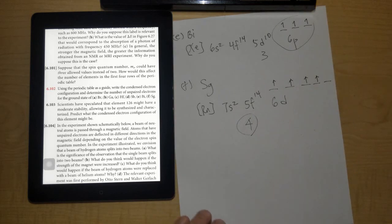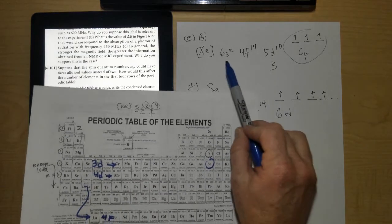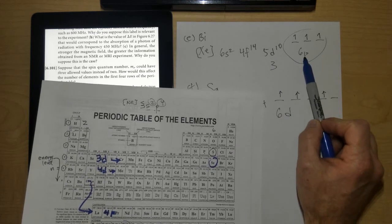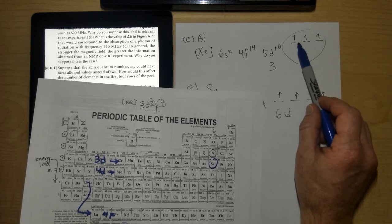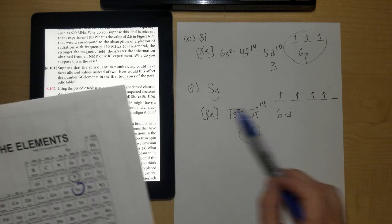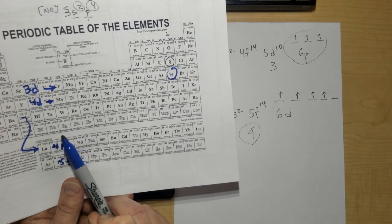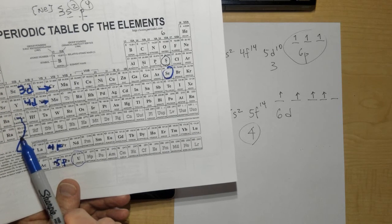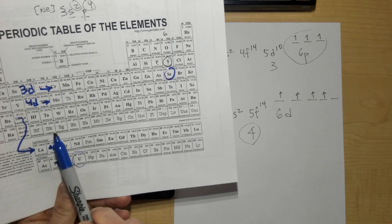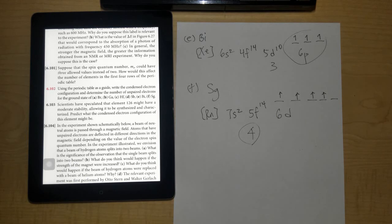Bismuth: [Xe] 6s² 4f¹⁴ 5d¹⁰ 6p³ — three unpaired electrons, one in each 6p orbital. Seaborgium, named after famous scientist Glenn Seaborg: [Rn] 7s² 4f¹⁴ 6d⁴ — four unpaired electrons in the 6d orbitals, one in each before pairing.